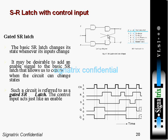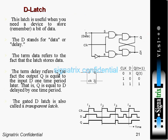A gated SR latch means you are adding extra gates in front of the cross-coupled latch to take more controllability. You cannot provide the control signal directly to the SR latch — since NAND gates only have two inputs, one is cross-coupled and the other is S or R. To add control over both S and R, you need to add extra circuitry.